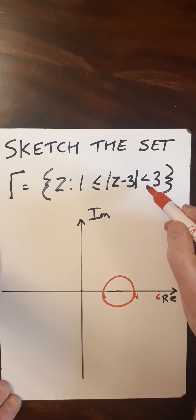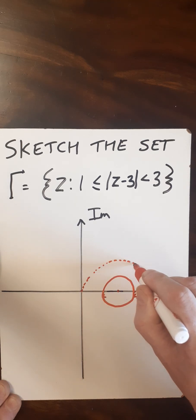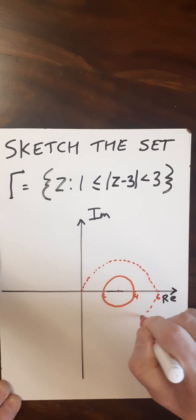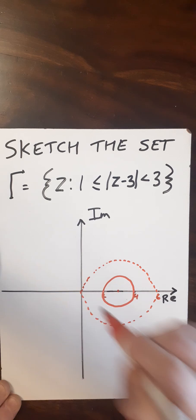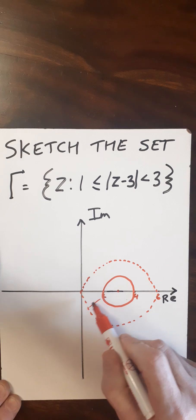Now, as this is not equal to, this will give me the boundary points not included. So I want a dotted line to go around. So that's roughly what I would have. Imagine that's a proper circle.